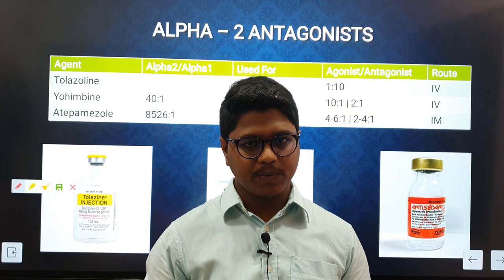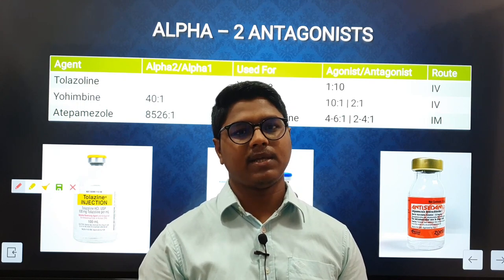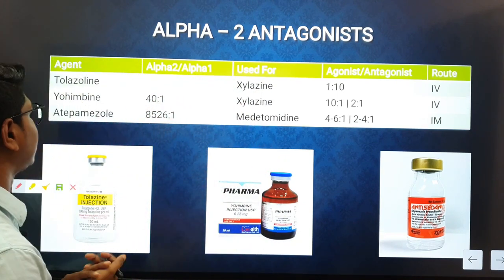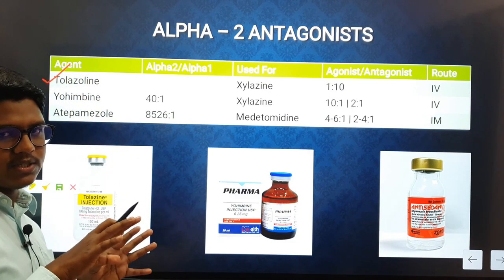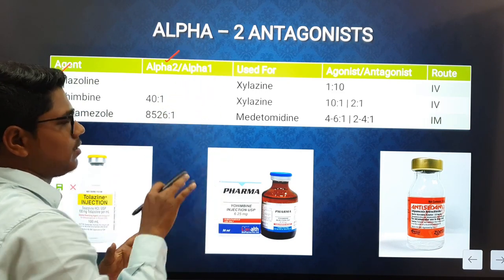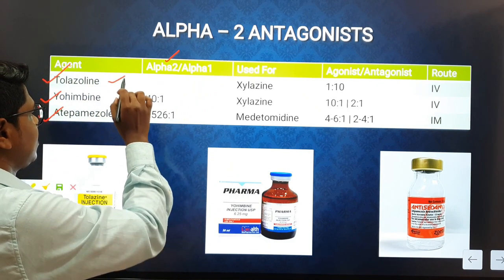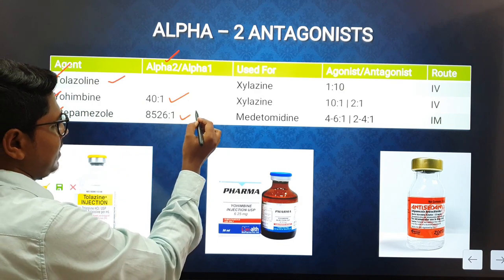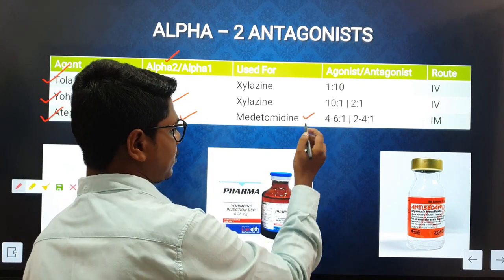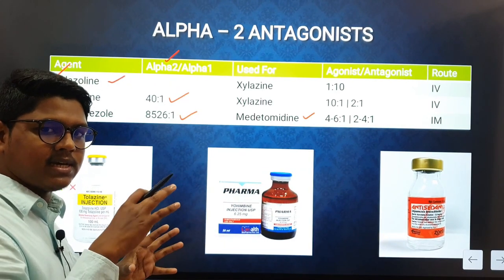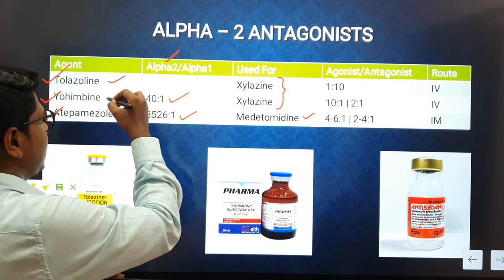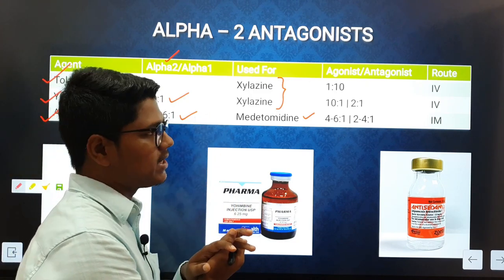Alpha-2 antagonists are very useful in the field because they can reverse the effects of alpha-2 agonists — this is why alpha-2 agonists are so popular. The three agents used as alpha-2 antagonists are tolazoline, yohimbine, and atipamezole. Regarding alpha-2 to alpha-1 selectivity: yohimbine is 40:1, atipamezole is 8526:1 — highly selective for alpha-2, which is why it is used for reversal of medetomidine. Yohimbine and tolazoline are used for reversal of xylazine.